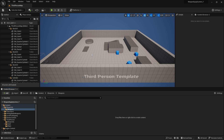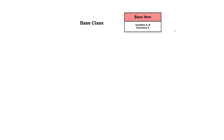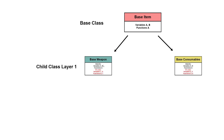That's where the concept of inheritance comes in. We'll create a base class — in this tutorial we'll name it BaseItem. Within BaseItem, for example, we can have variables A, B and function A. From this BaseItem class we can make child classes — a BaseWeapon and a BaseConsumable. These child classes inherit variables and functions from the parent class, and they can also have their own sets of variables and functions.